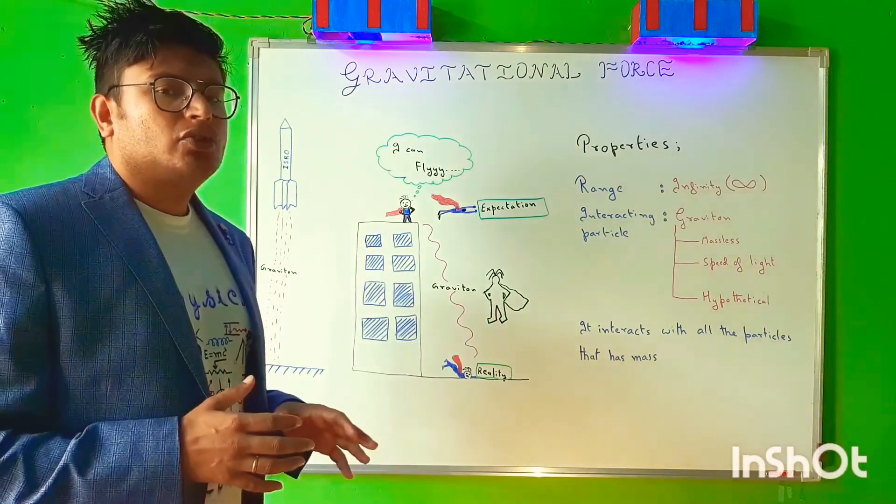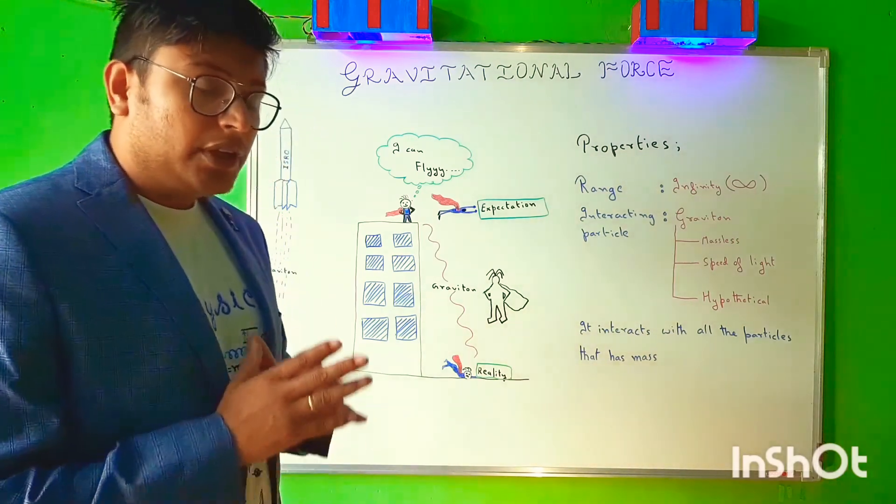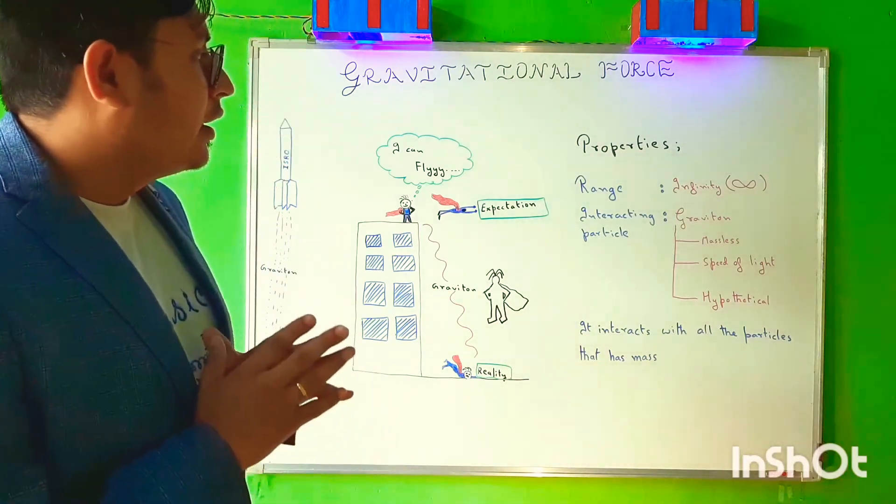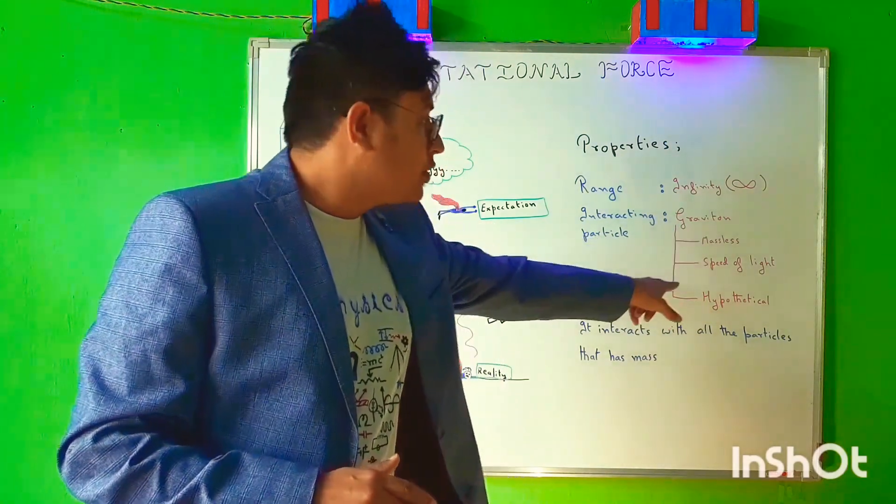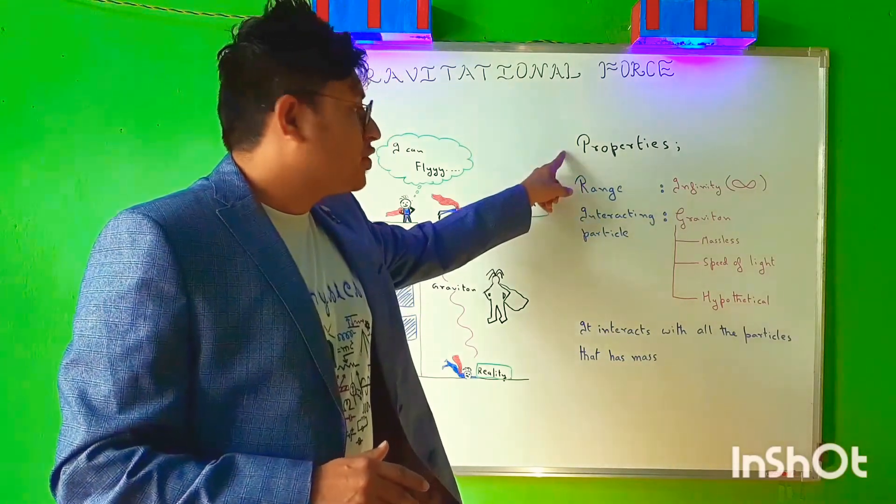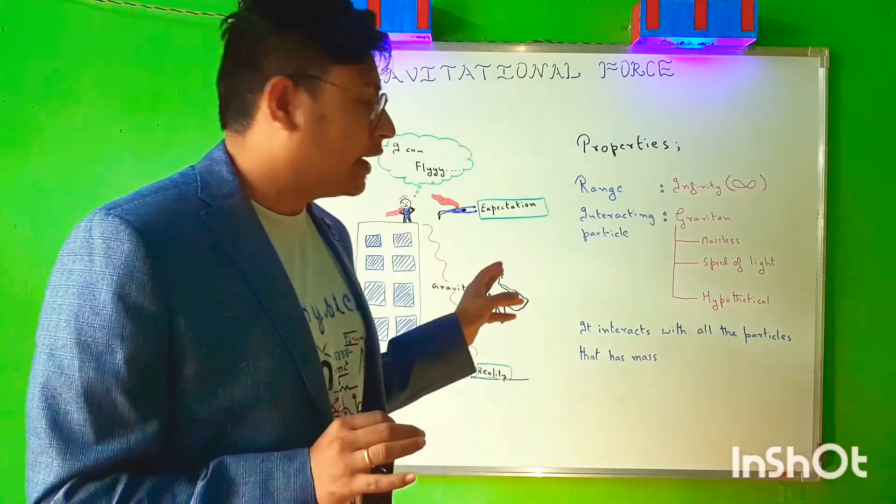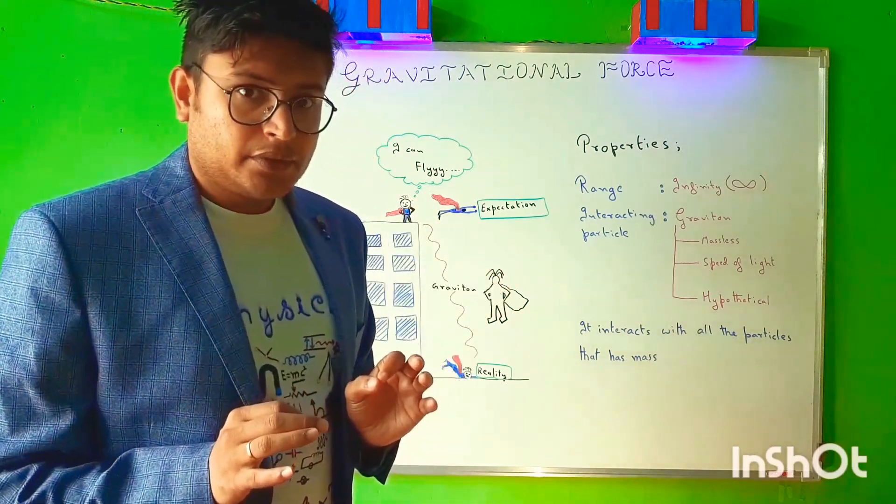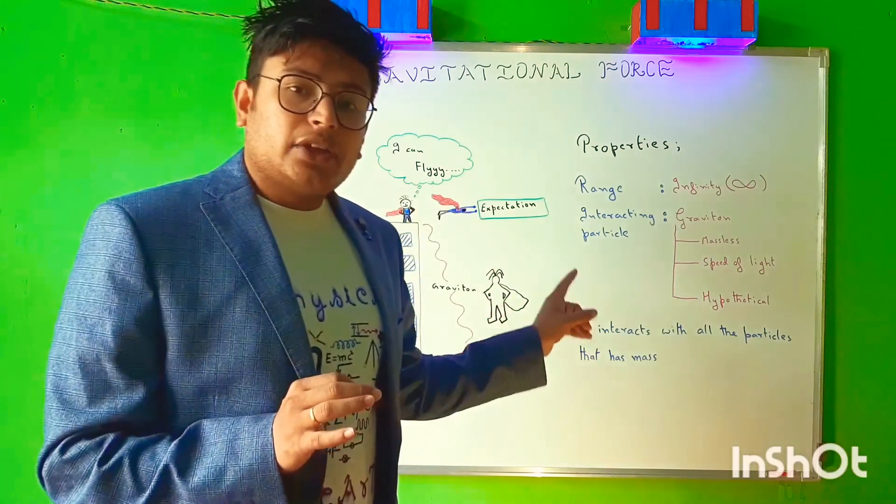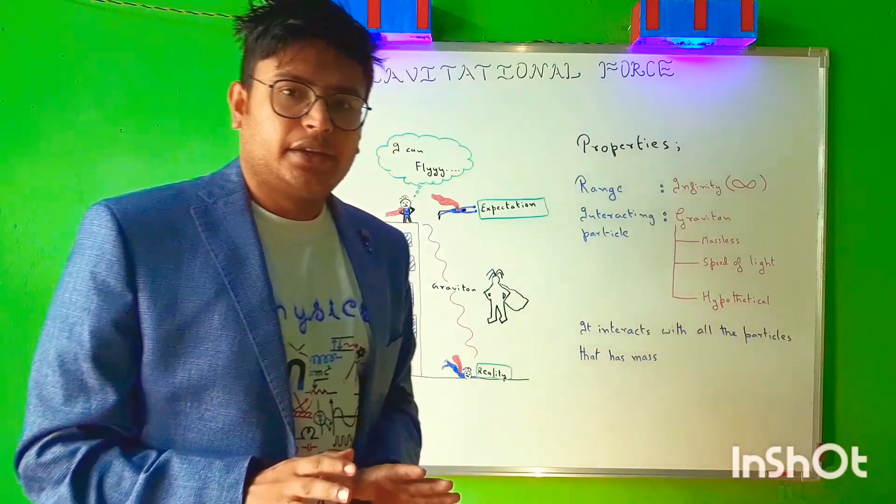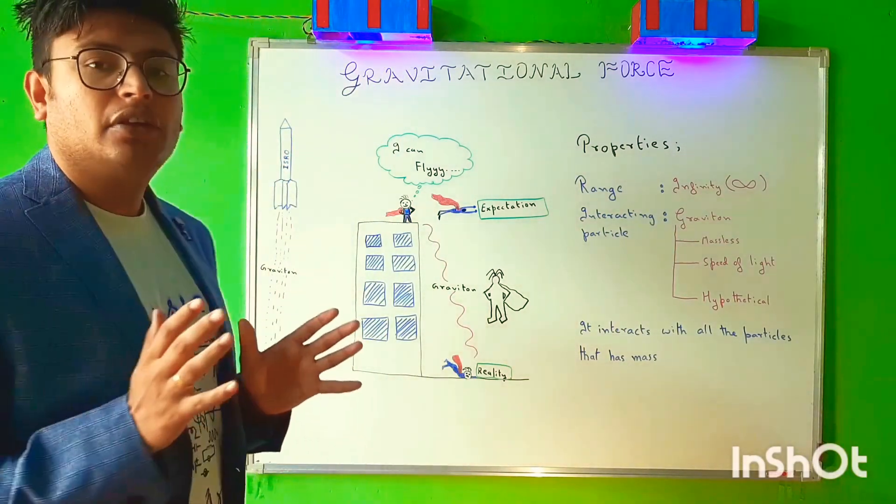Though this particle has not yet been discovered, if it exists then it has to be massless. Because from the properties of the gravitational force, the range of the gravitational force is infinity, therefore this particle has to be massless, similar to that of a photon, and it has to propagate at the speed of light. So this is your brief introduction to gravitational force.